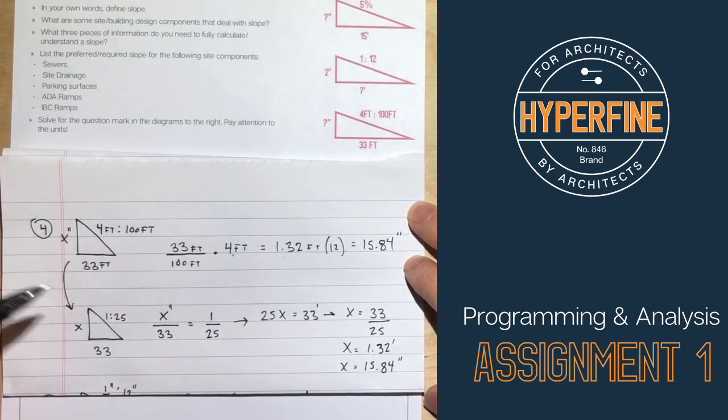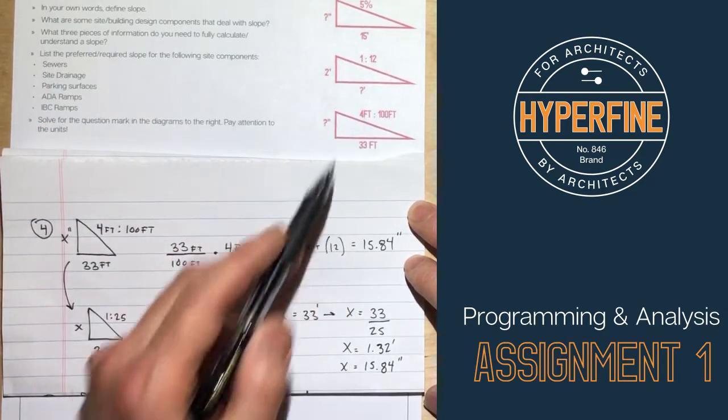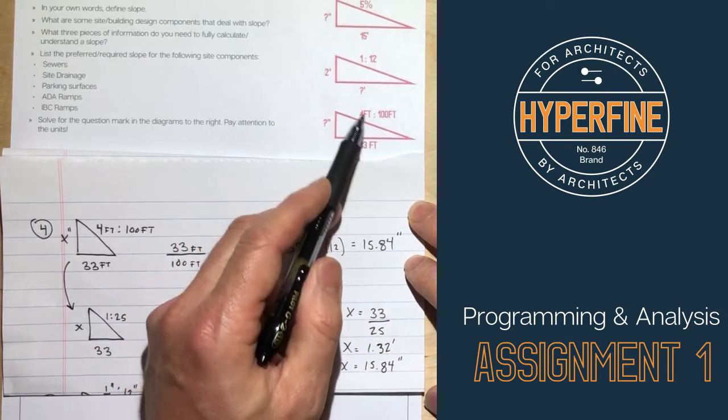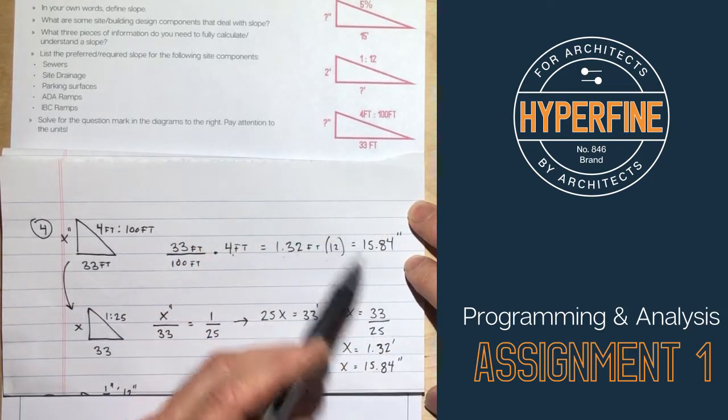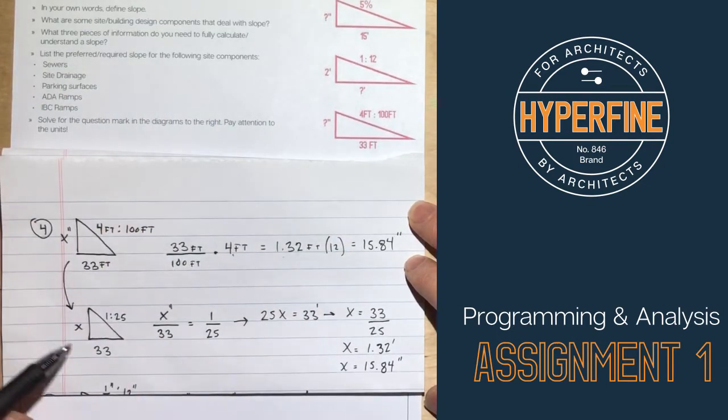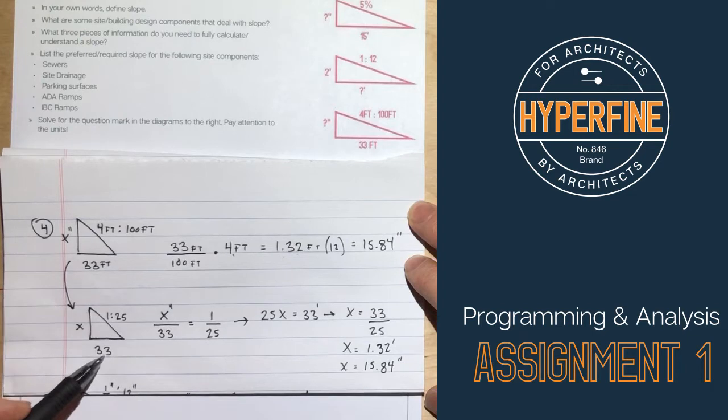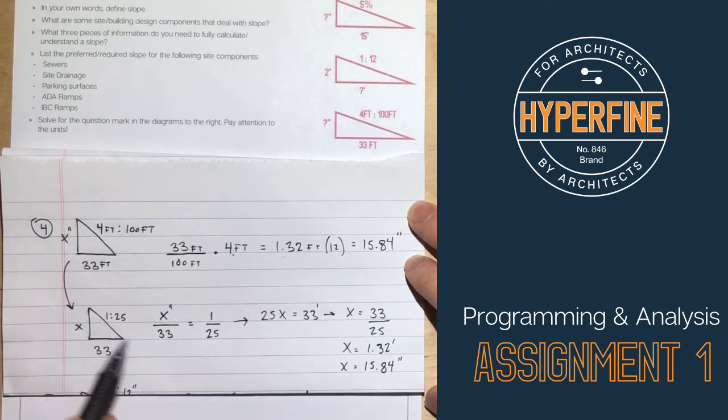Another way to set this up, if this is confusing, you can always just change this to a ratio. So 4 feet in 100 feet is the same as saying 1 in 25. So if we rewrite that as our run is 33 feet, our rise is unknown, and our slope is 1 in 25, then we can just set that up as we did before. So as our ratio, x over 33 equals 1 over 25. You cross multiply and divide, and you end up with the same values. X equals 1.32 feet, which is 15.84 inches, and then you can round up to 16 inches.